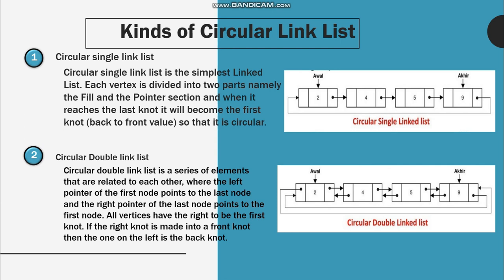The circular single linked list is a simple linked list where each vertex is divided into two parts: the data field and the pointer section. When it reaches the last node, it will point back to the first node, which is why it is called circular.